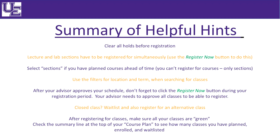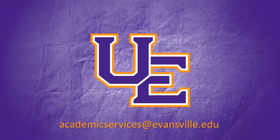Your advisor needs to approve all your classes in order to register. A closed class is a section that is no longer available unless you have instructor consent. If you come across a waitlisted class, make sure to waitlist yourself and also register for alternative classes. After registering for classes, make sure all your classes are in green. Check the summary line at the top of your course plan to see how many classes you have planned, enrolled, and waitlisted. For any additional questions or concerns, please contact AcademicServices@Evansville.edu.